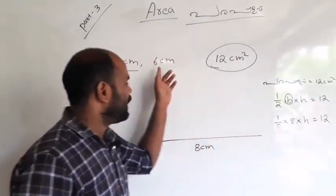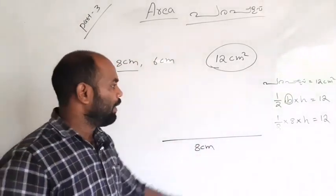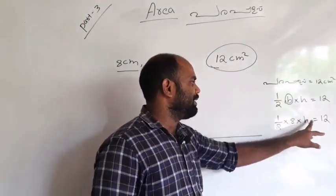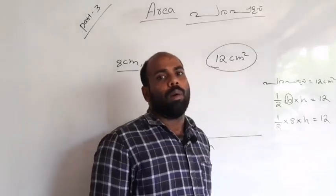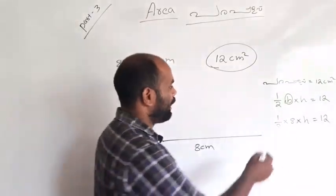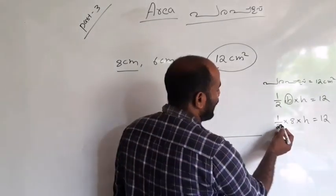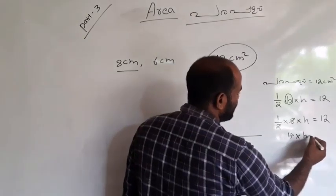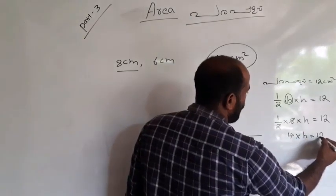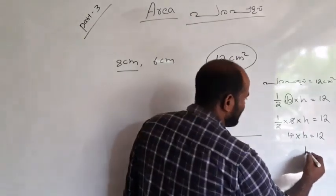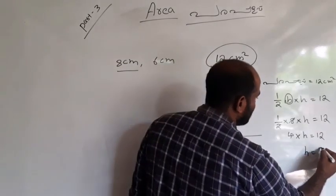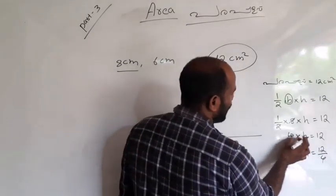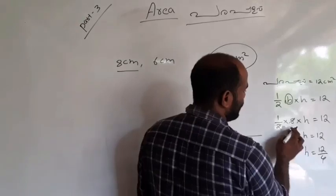You can also add a side to the side. The second is: Area = ½ × h = 12. Now, Area = ½ × h = 12. That is, h = 12 divided by 4. Because 4h is 12. Then h = 4.